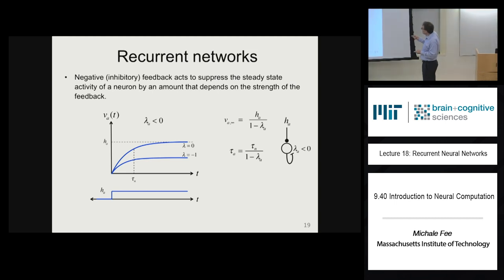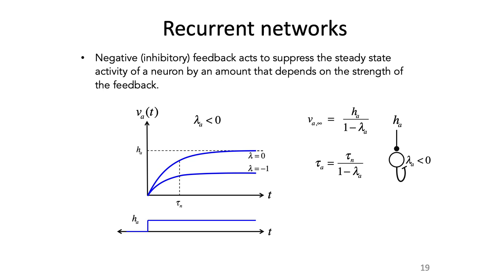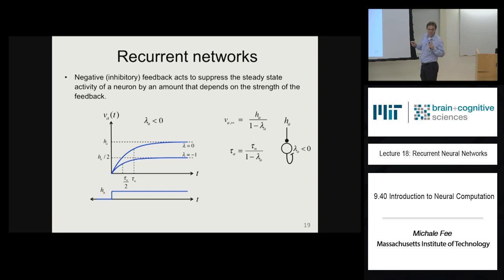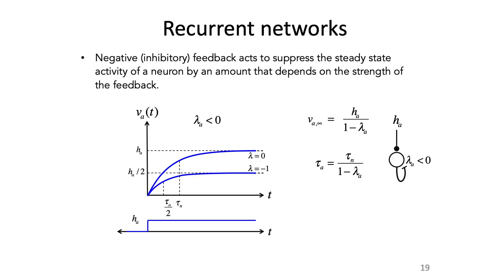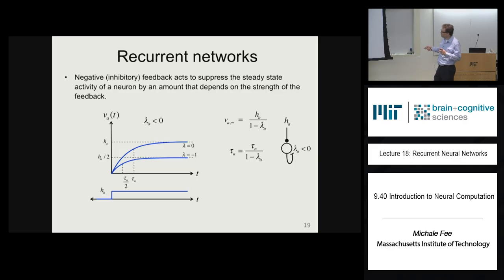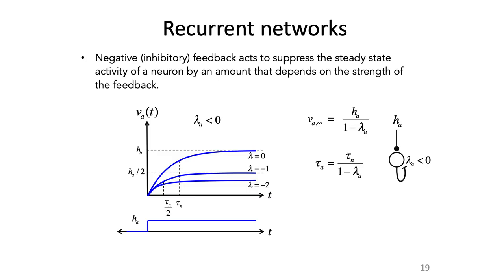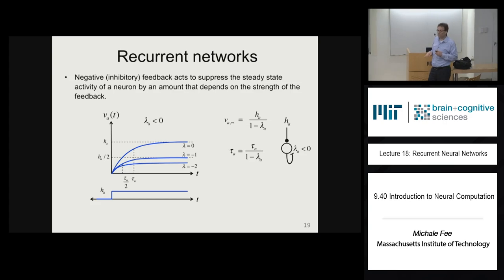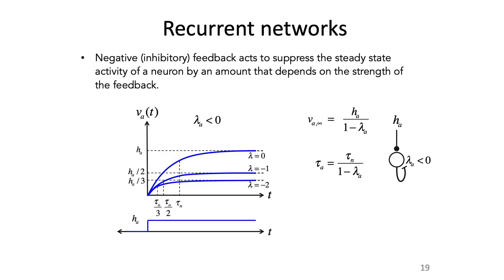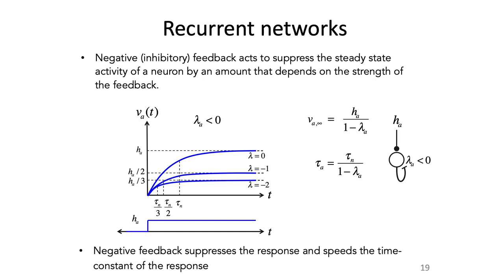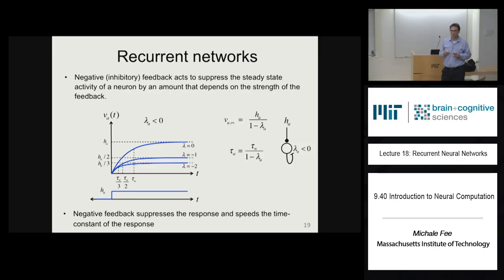The more you turn up the inhibition, the more suppressed the neuron's response, but the faster it is. Negative feedback suppresses the response of the neuron and speeds up the response. There's one other really important thing about recurrent networks where lambda is less than one: the activity always relaxes back to zero when you turn the input off. Put a step input in, the neuron responds exponentially toward v_infinity, but when you turn the input off, the network relaxes back to zero.